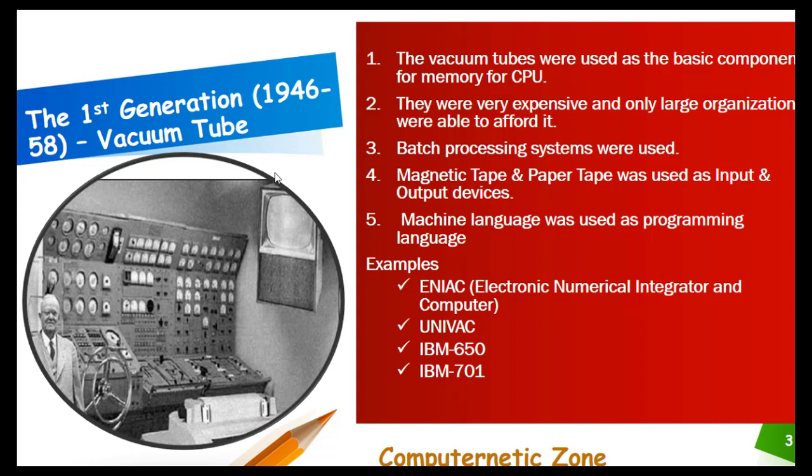As you can clearly see in the picture, these vacuum tube systems were huge and occupied very large spaces — sometimes a whole room or building. Examples of first generation computers include ENIAC, the Electronic Numerical Integrator and Computer.